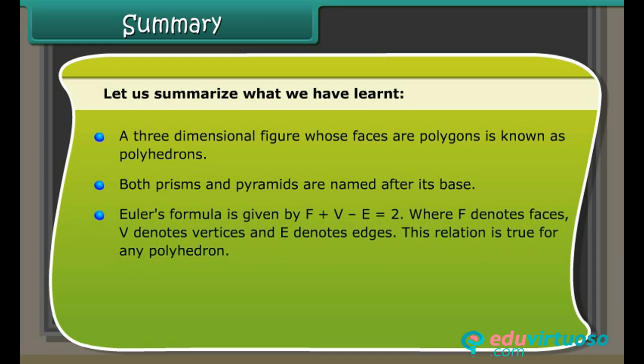Euler's formula is given by F + V - E = 2, where F denotes faces, V denotes vertices, and E denotes edges. This relation is true for any polyhedron.